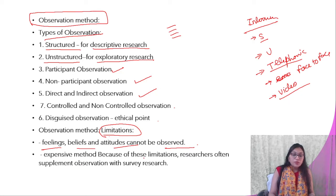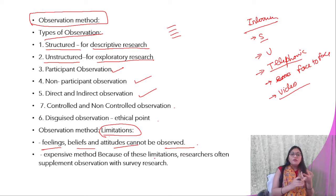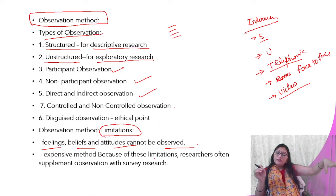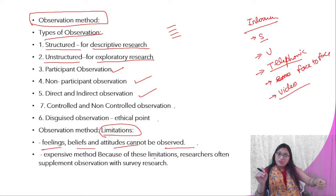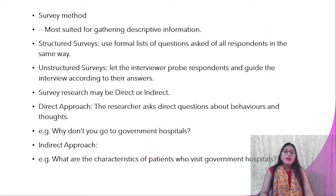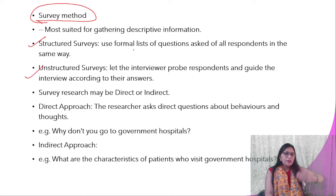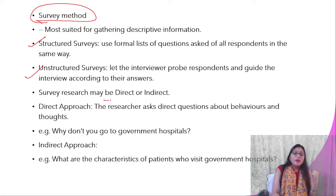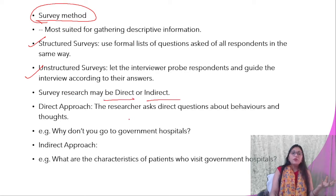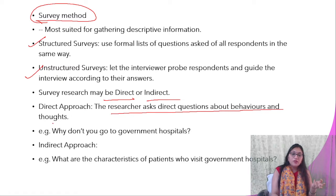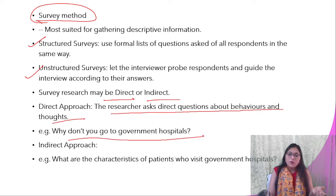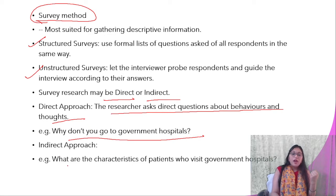Some of these methods are expensive. For example, a field survey is expensive since you have to collect data in the field and get involved personally. In the survey method, there can be a structured or unstructured survey depending on your list of questions. You can ask direct questions — for example, why don't you go to the government hospital — or you can get involved in an indirect way to gather information through indirect questioning.